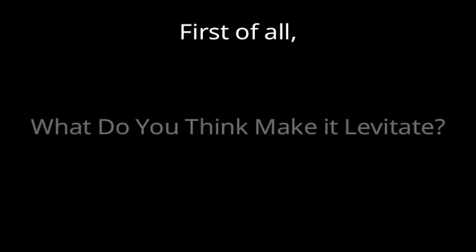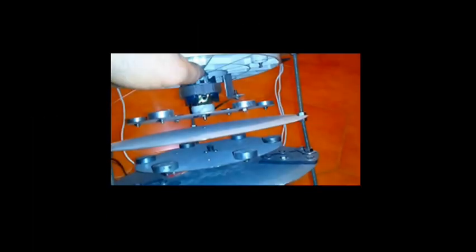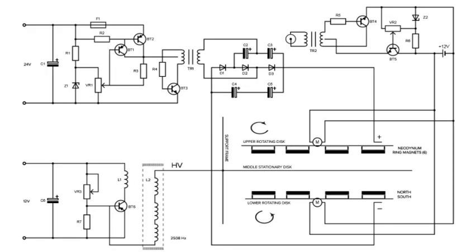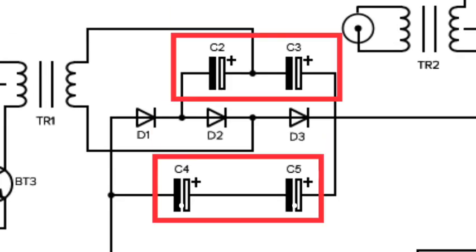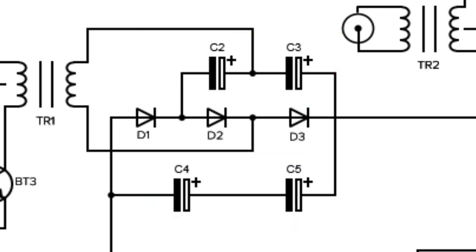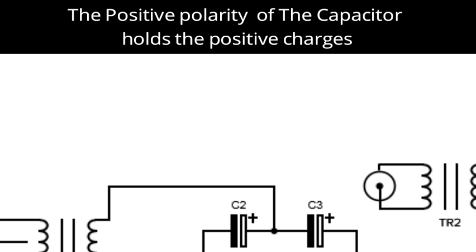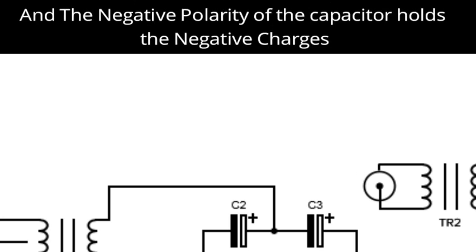First of all, what do you know about this platform and what do you think makes it levitate? Let me show you the schematic Alexei Chekhovkov provided. He shared the upward disc with positive charges and the downward disc with negative charges, but you don't have to focus only on the circuit. According to experiments done about three years ago on this Freiburg circuit, you cannot get the electrostatic charges that ionize the air when using polarized capacitors like these ones. And that is actually what Alexei misled us about in the circuit — he mentioned that the positive polarity of the capacitor holds the positive charges and the negative polarity holds the negative charges.